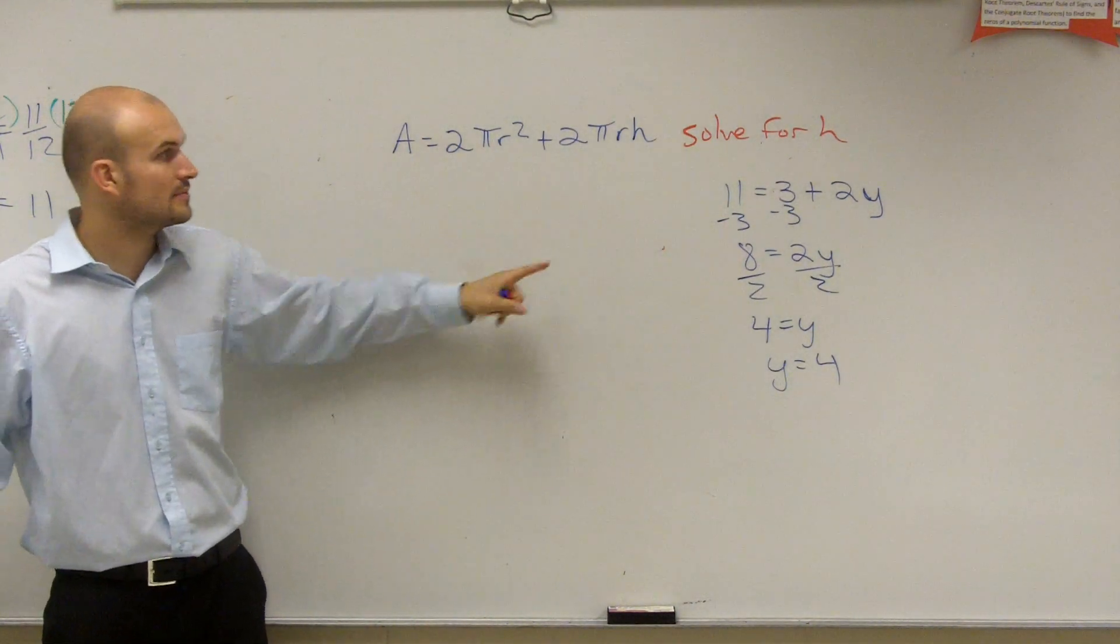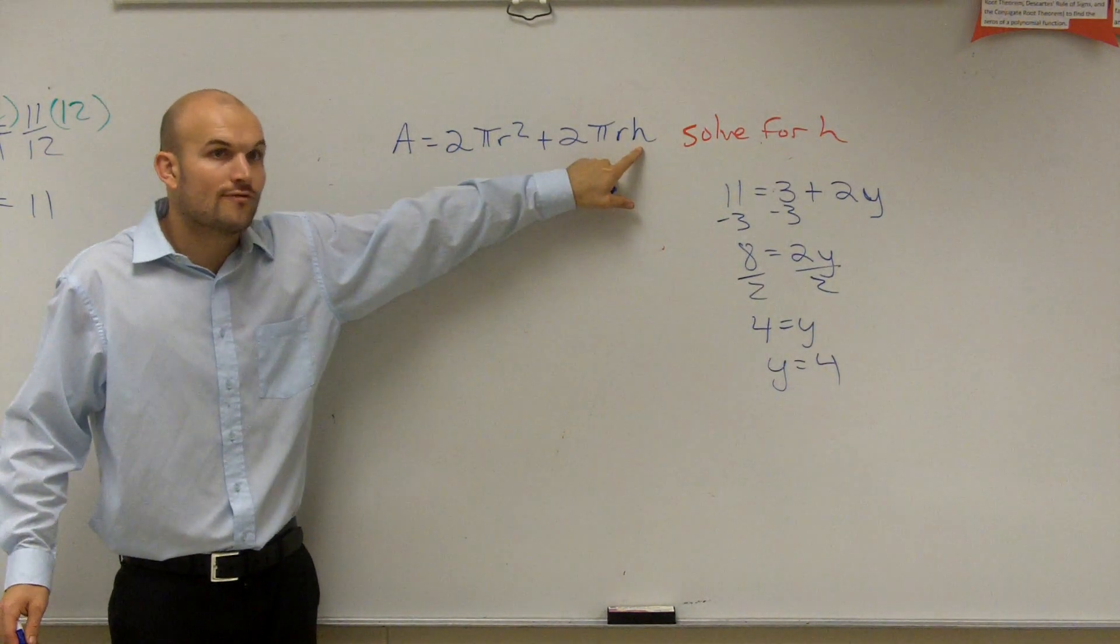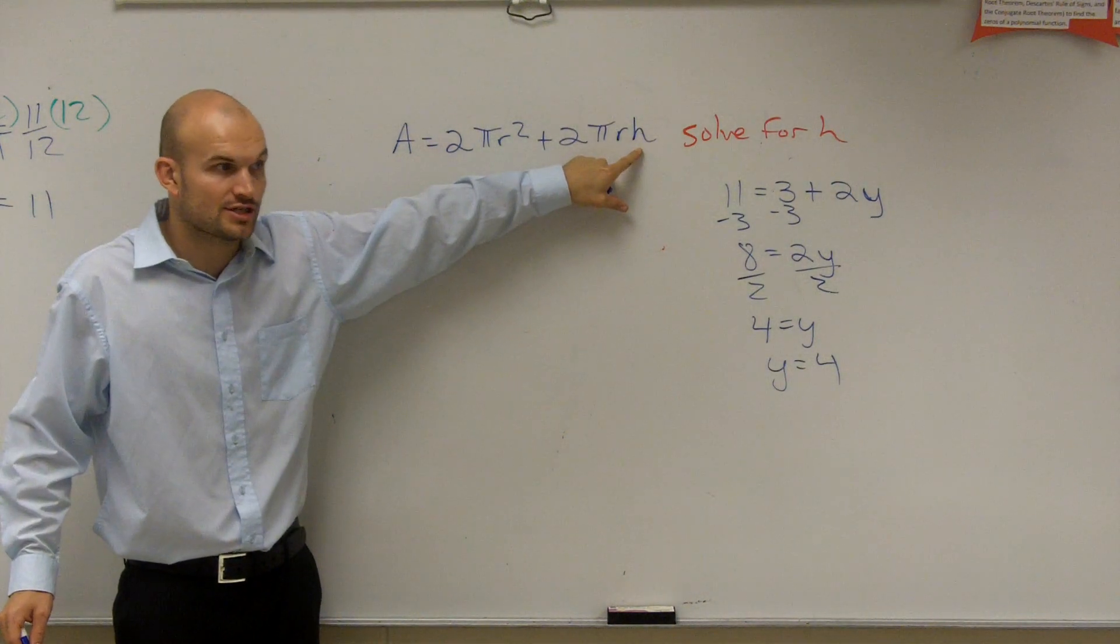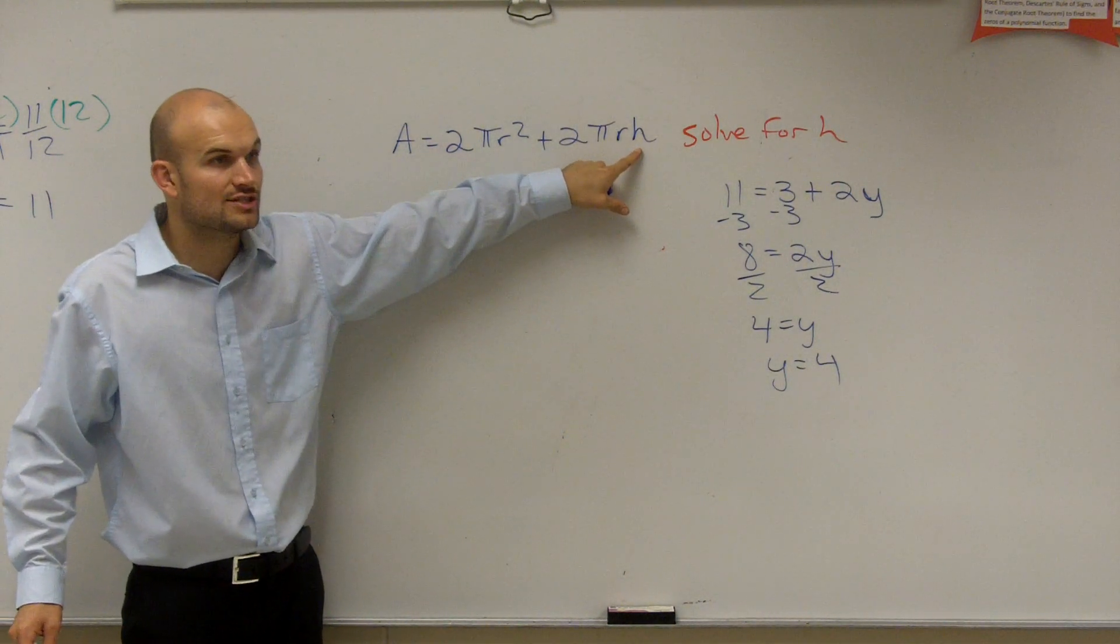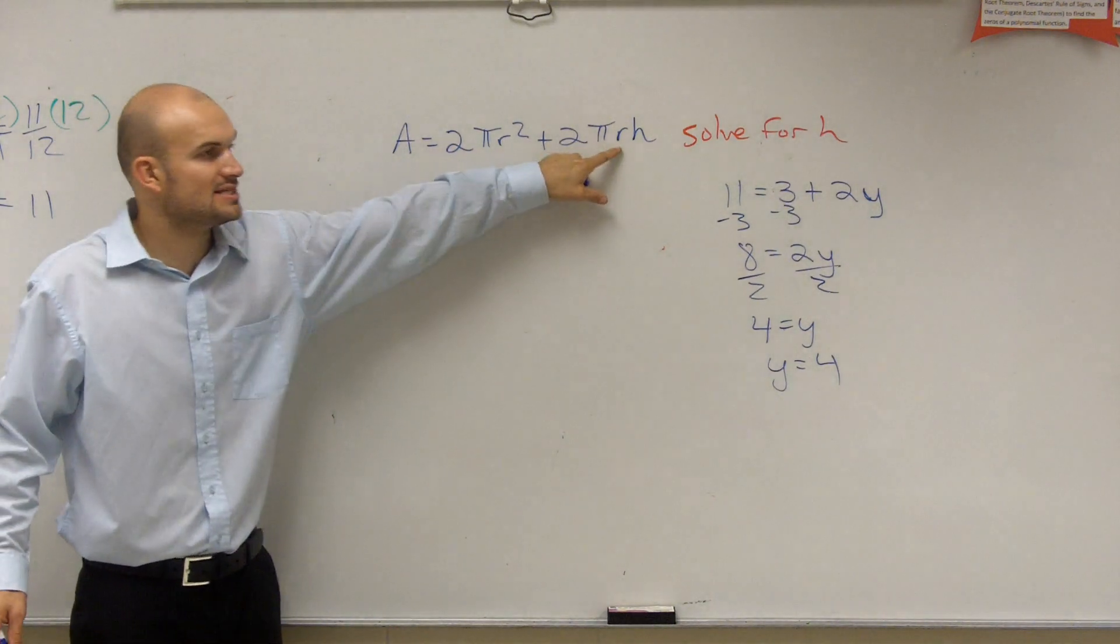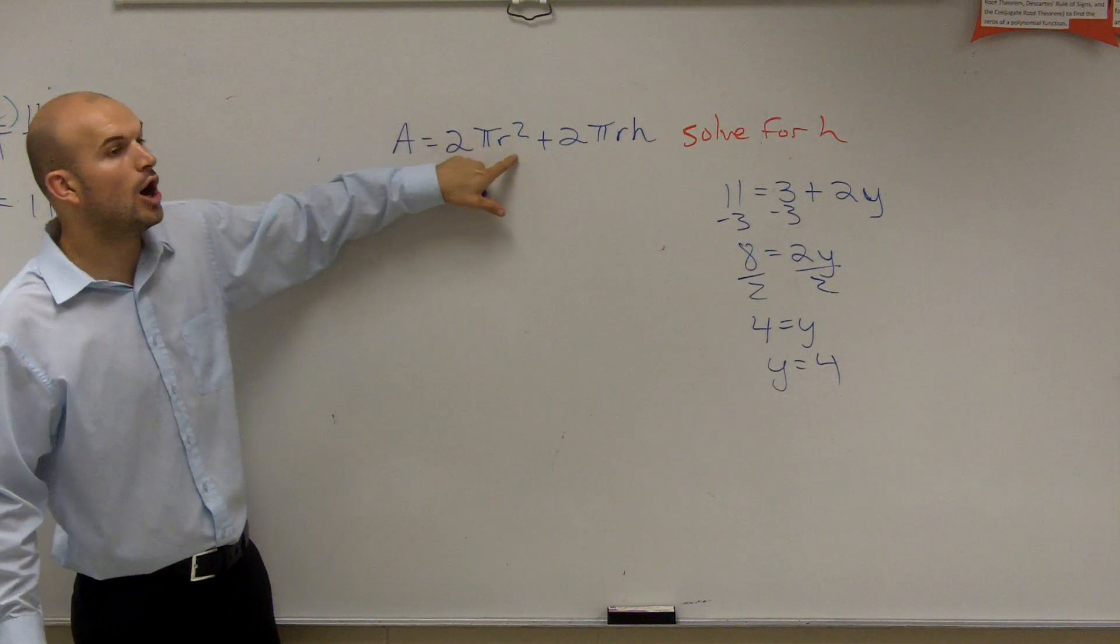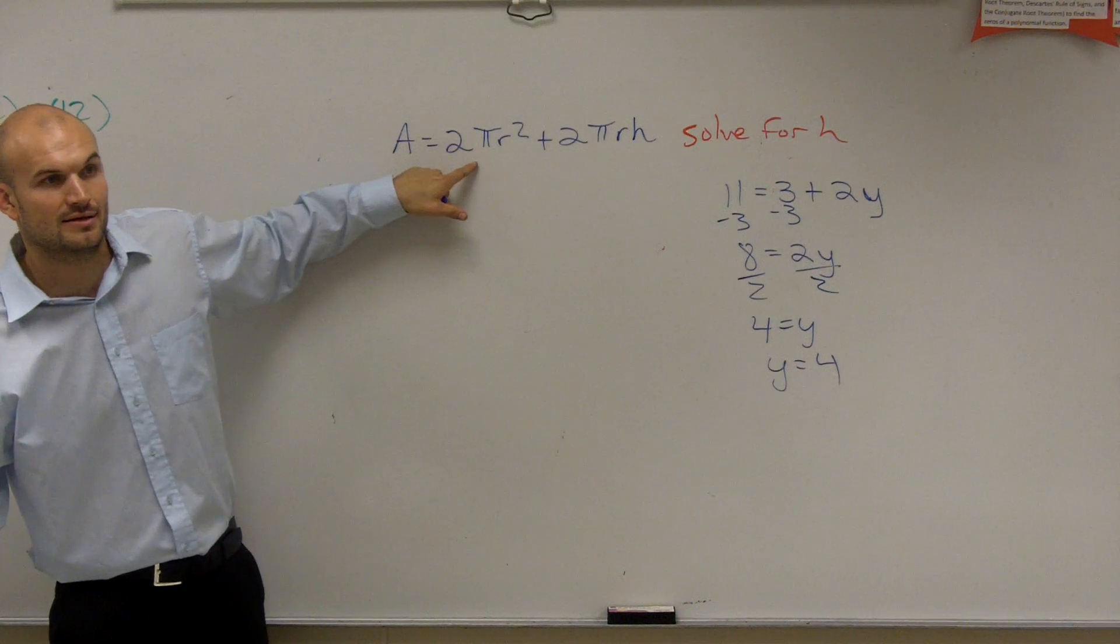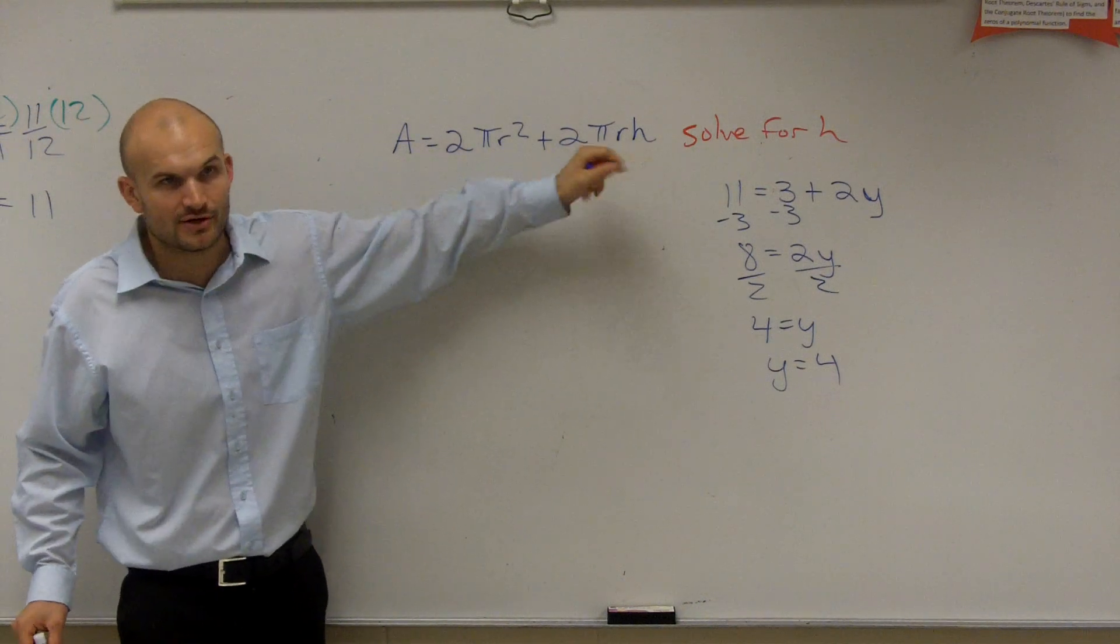What are we trying to solve for? h, right? First thing we need to do, undo addition and subtraction. What is being added to the h? That's all multiplied, multiplied, multiplied. That's a plus, plus. That's a plus. But all this stuff is positive. So all of this is being added. All of this is being added to your h.